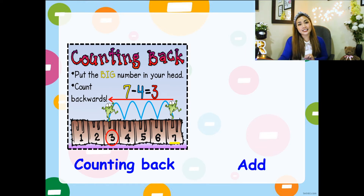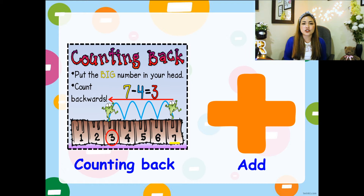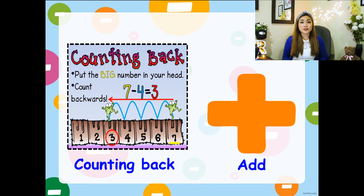Or you can always add. Remember, addition and subtraction are friends — they're related to each other. So if I want to know the answer from seven minus four, I can find what completes seven or what makes seven. We've got four already, so four, five, six, seven — three. So you just need three.